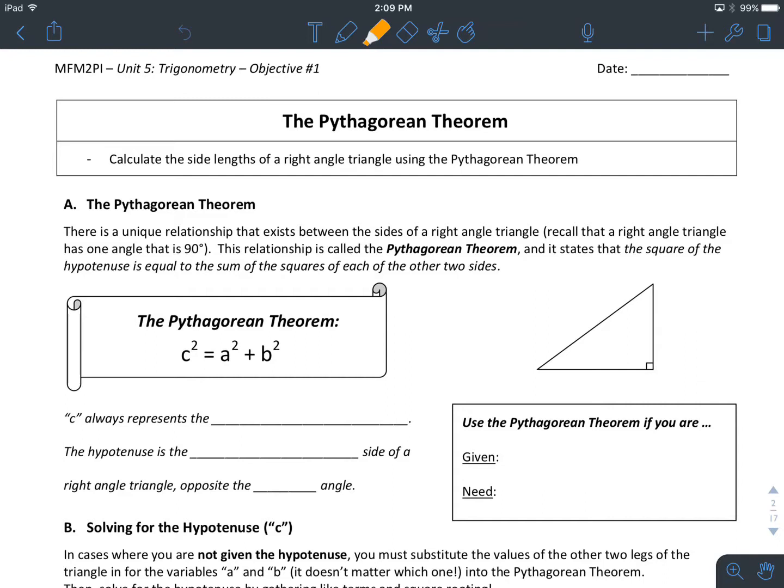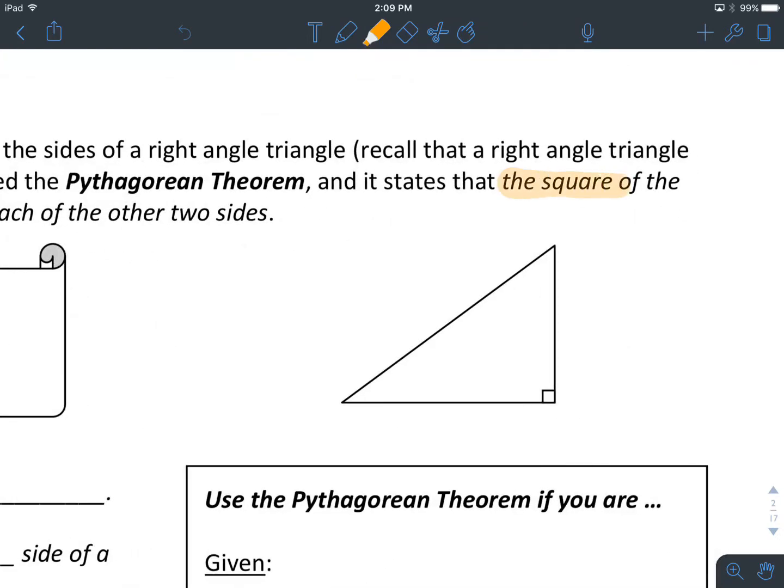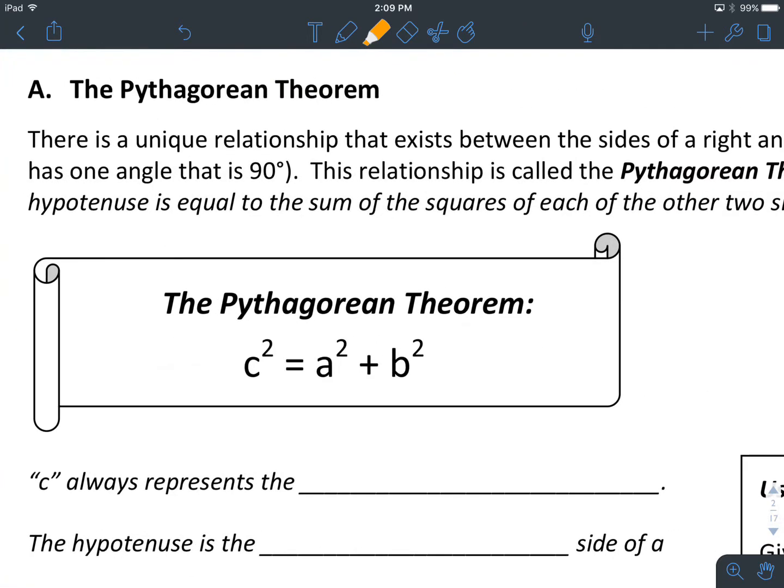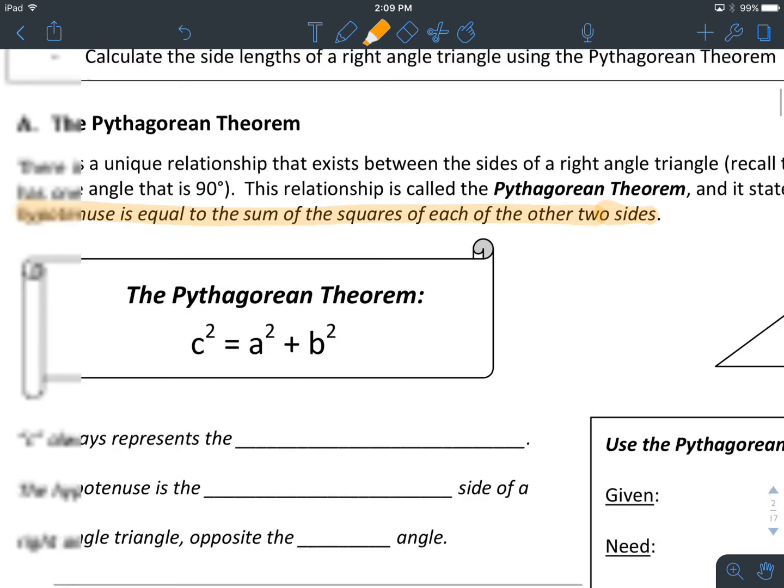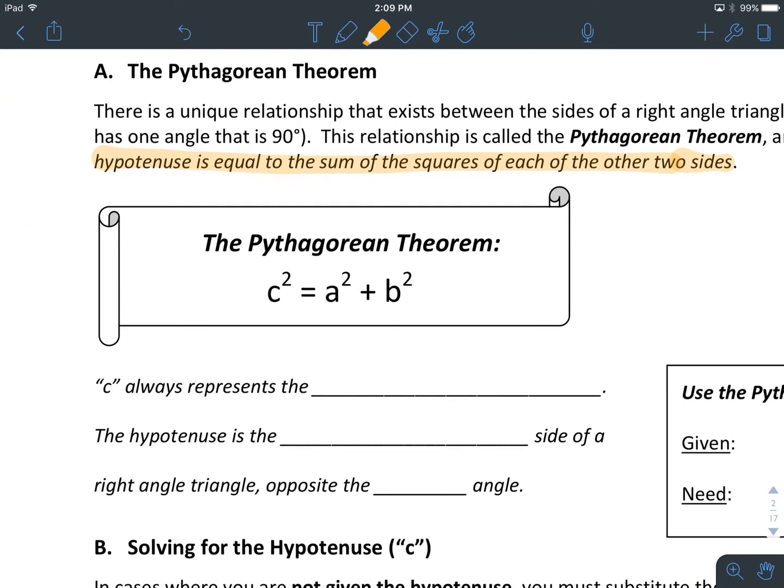The Pythagorean Theorem is a relationship between the sides of a right-angle triangle. You'll recall that a right-angle triangle has one angle that is 90 degrees. This special relationship, the Pythagorean Theorem, states that the square of the hypotenuse is equal to the sum of the squares of the other two sides. And this is what the Pythagorean Theorem looks like: c² = a² + b².